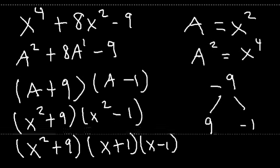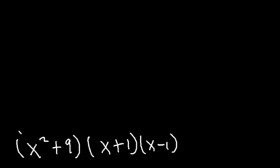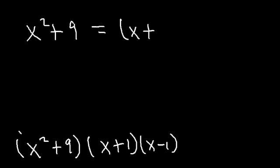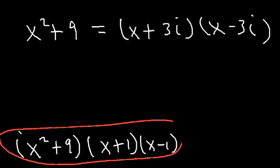So that's the final answer. By the way, if you've covered imaginary numbers already, you could represent x squared plus 9 as x plus 3i and x minus 3i. If you haven't, you could simply leave your answer as is.